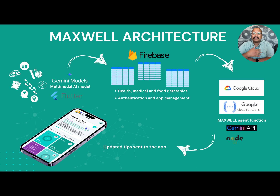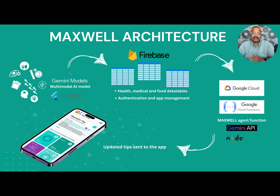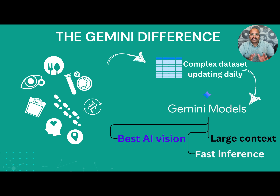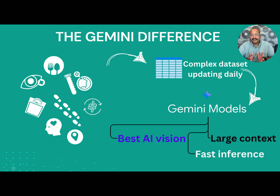The framework for Maxwell is pretty straightforward. I use Flutter to develop an app that leverages multimodal Gemini models to capture the different inputs. This is all processed and stored in Firebase as a data store, which is also used for authentication. All of this data is then run through a Google Cloud Function that leverages the Gemini API and Maxwell's instructions to provide the user with an actionable insight for the next day. Users can set their own custom instructions. The differentiator for using Gemini AI models is threefold: large context length, fast processing, and excellent AI image analysis — and Gemini models captured all three of these facets really well.